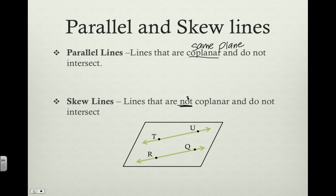Not co-planar means not the same plane. For example, we've got line SV coming out of the plane. It intersects the plane right here at this point, pierces through it, and continues on. Line SV is skew to both lines RQ and TU. It's never going to intersect those two lines, and it's not in the same plane.